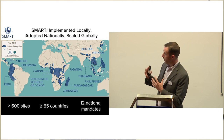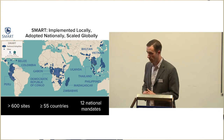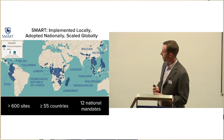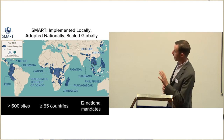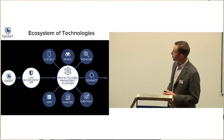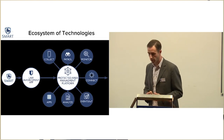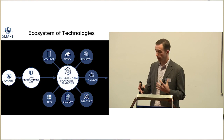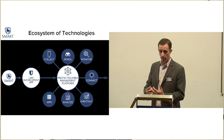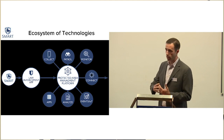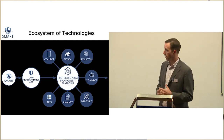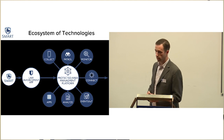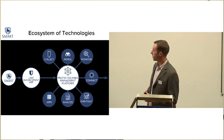This is just a glimpse of the scale of SMART. It's deployed in some way in over 600 sites in over 55 countries, and it's adopted nationally in 12 countries. Originally SMART started out as a wildlife law enforcement application, but over time it's grown to become a much more holistic protected area management platform. With each coming iteration — we'll be releasing SMART 6 later this year — we're adding new services and functionality to provide users with a baseline platform to improve their management and enforcement efforts.